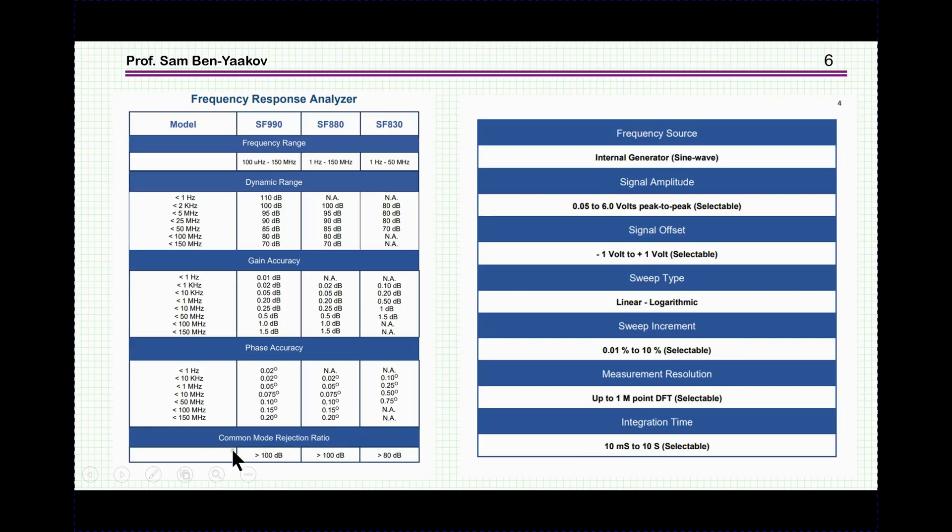And then we have the phase error, which is like 0.02 degrees, and then it goes to a maximum of 2 degrees, which is very nice. Then it says that there is a common mode rejection ratio. To be honest, I'm not sure about this. This is a single-ended unit. I don't know what they are meaning. Perhaps they are meaning the extraction, the signal noise capability of the unit. That is the extraction of the signal from the noise. Perhaps this is the meaning of this. Otherwise I can hardly understand what it means, common mode rejection, because it's a single-ended unit.